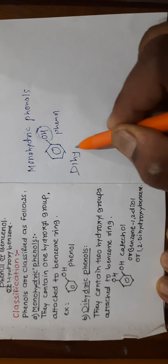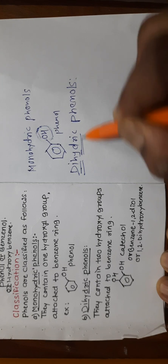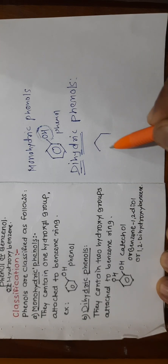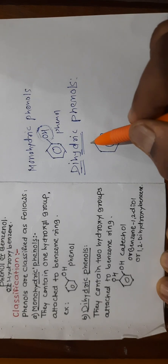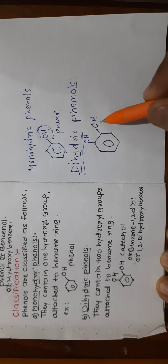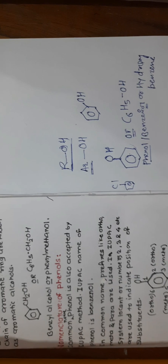Second are dihydric phenols: they contain two hydroxyl groups. For example, when the first OH group is at position one and the second is at the adjacent (ortho) position two, the compound is benzene-1,2-diol. Its common name is catechol — that is important. Two OH groups at adjacent positions is known as catechol.